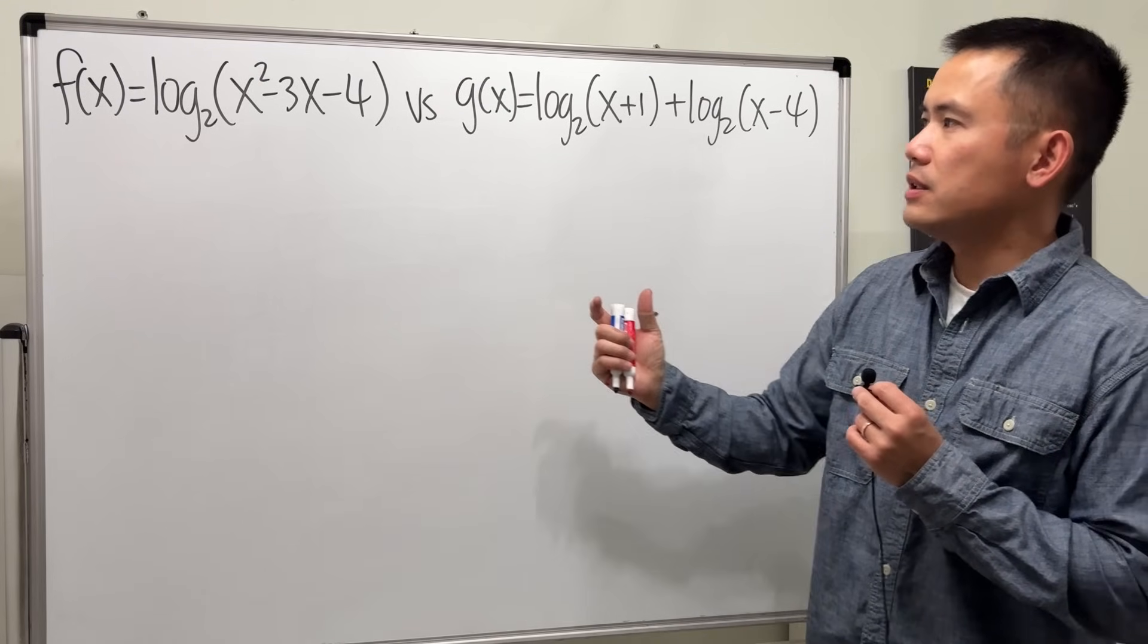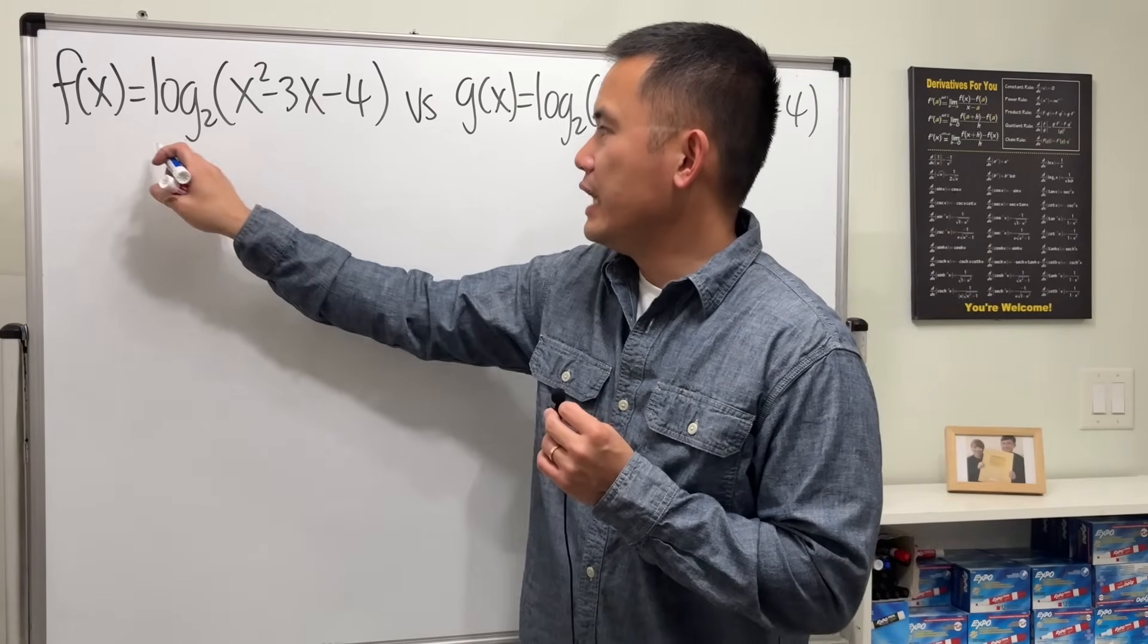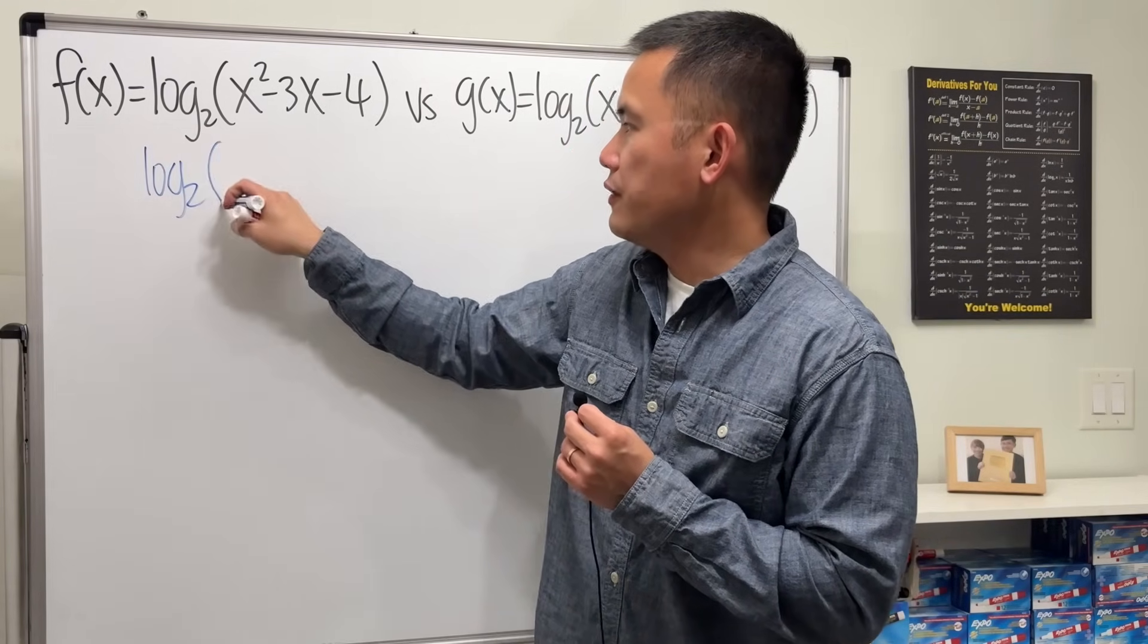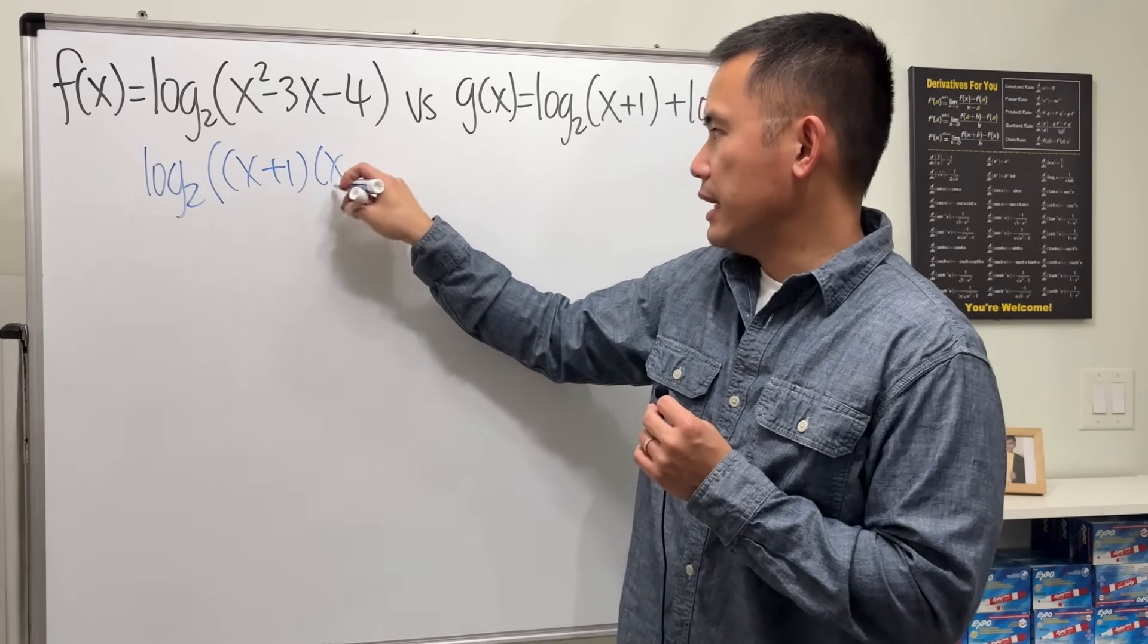Well, many of us will look at the inside because we have done factoring so often, right? We'll just factor it and then we get log base 2 of, factor this, we get x plus 1 times x minus 4.